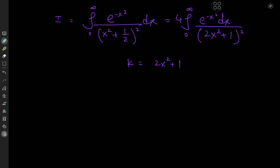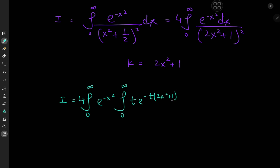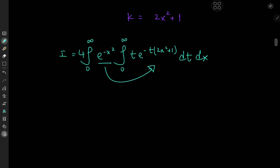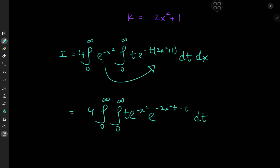For the fancy multivariable calculus, we have the target integral I written as 4 times the integral from 0 to infinity of e to the negative x squared times — now instead of the 1 over (2x squared plus 1) squared term — the integral from 0 to infinity of t times e to the negative t times (2x squared plus 1) dt dx. This term is independent of t, so we can take it inside the integration operator, giving 4 times the double integral from 0 to infinity of e to the negative x squared times t times e to the negative (2x squared t minus t).